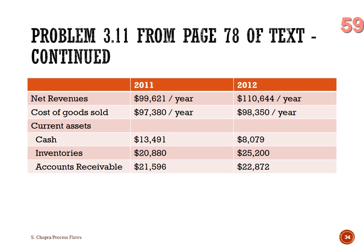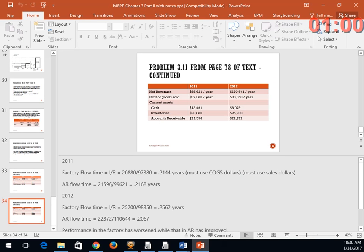Overall net income increased, so at the aggregate corporate level there's improvement. But based on these calculations, should we focus on accounts receivable collections or factory flow time? We should focus on factory flow time — accounts receivable actually got better. That does it for today's lecture. Remember: a snapshot in time represents inventory in Little's Law, and dollars across time represents throughput in Little's Law.